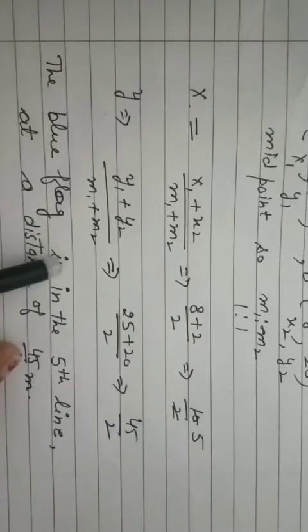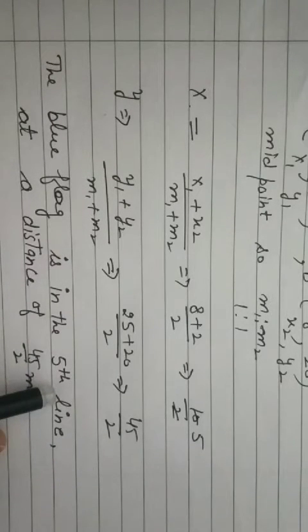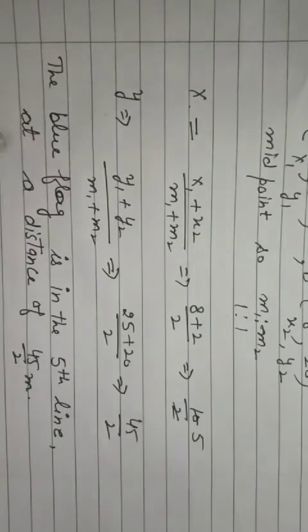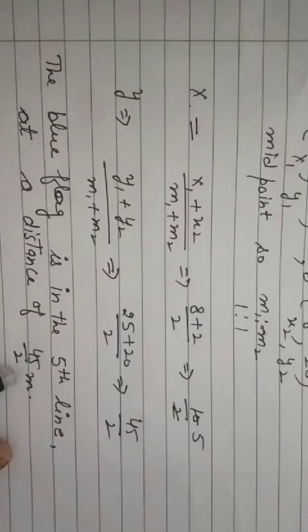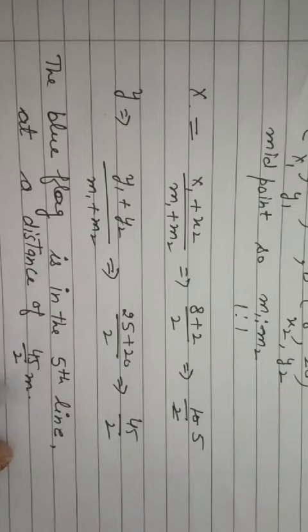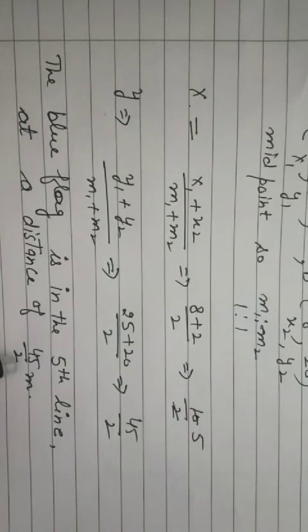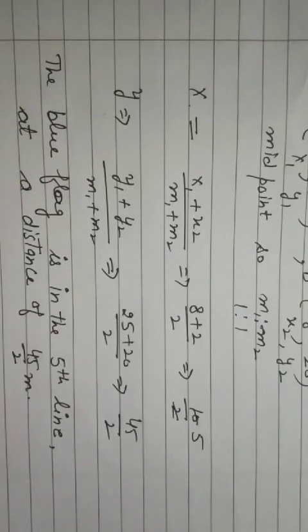So blue flag is in the fifth line. Where will it be? Fifth line. And add the distance of 45 by 2 meter. And at what distance means on AD, its distance will be 45 by 2 meters. Thank you.